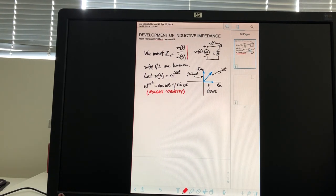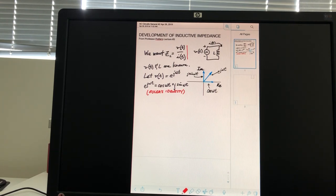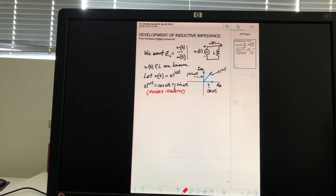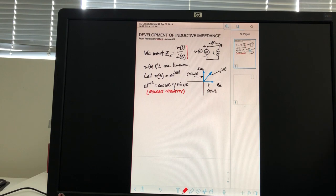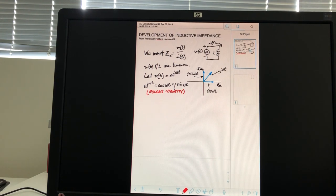We want this value right here. We want a Z sub L, which is something like Ohm's law, which is V over I. So, this is what we're after, an impedance that has the same kind of properties as resistance, except that it's for AC. And like I said, V and L are known.